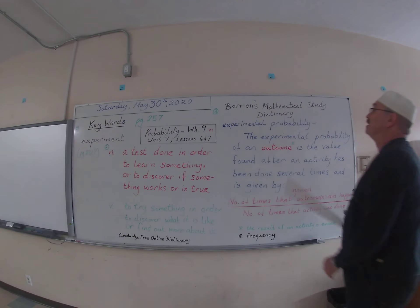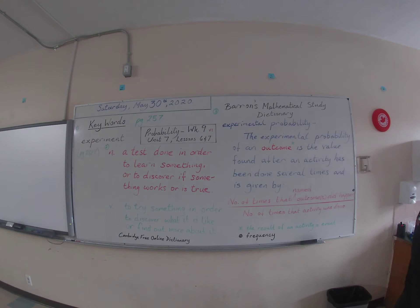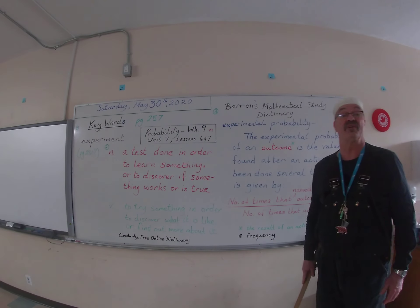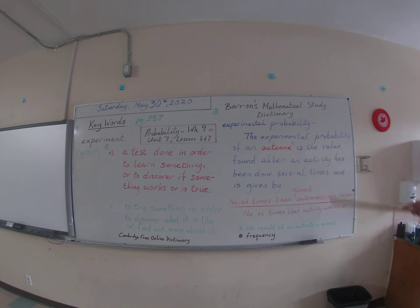I then of course went to Barron's Mathematical Study Dictionary, and there was a definition for experimental probability. And what it said was, the experimental probability of an outcome is the value found after an activity has been done several times and is given by.